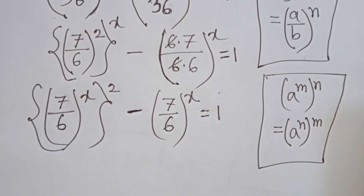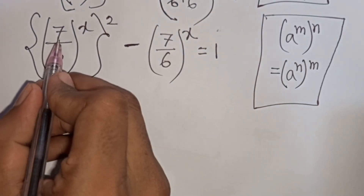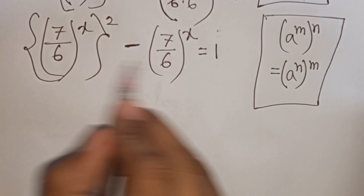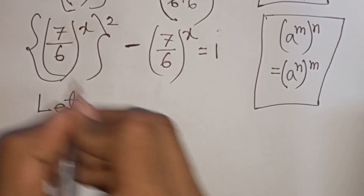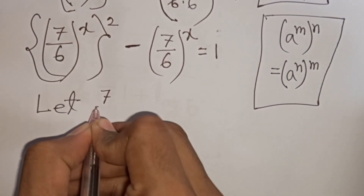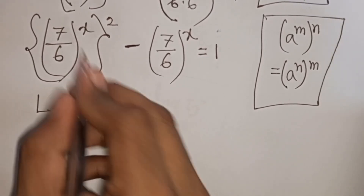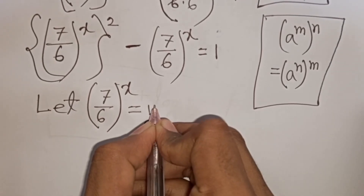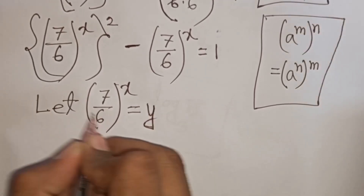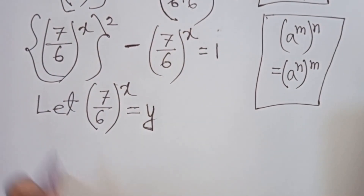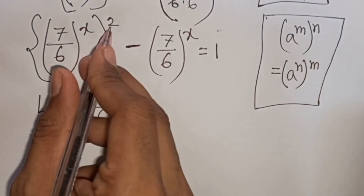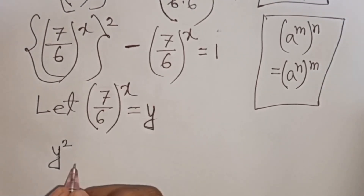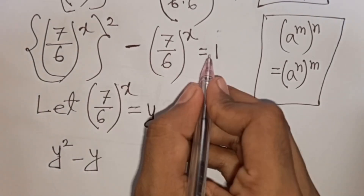We see that (7/6) to the power x appears in both terms and they are the same. So let y equal (7/6) to the power x as a substitution. Our equation becomes y squared minus y equals 1.